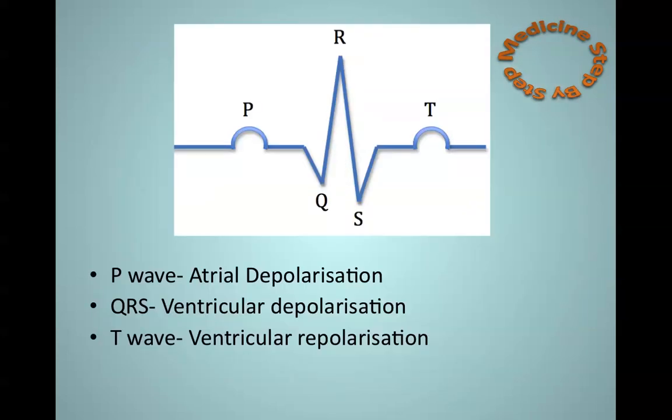As I earlier said, these patterns represent electrical activity of the heart. The P wave represents depolarisation of the atria and it is therefore when the atria contract. The QRS complex represents depolarisation of the ventricles and it is when the ventricles contract.